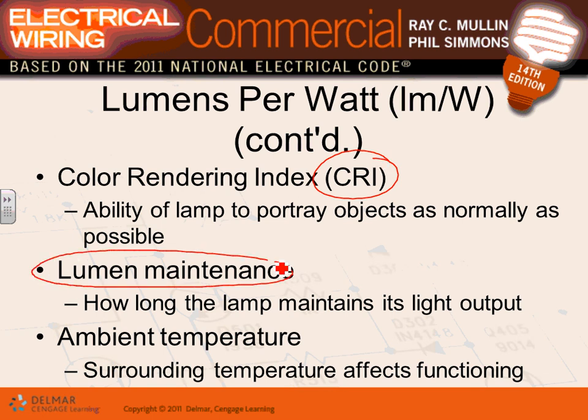Lumen maintenance — also called lumen depreciation factor — is how long the lamp maintains its lumens. If a fixture is rated at 3000 lumens, how long will it maintain those 3000 lumens? Will it stay at 3000 for 24,000 hours or will it dip before that? The longer the lumen maintenance, the better the output over time.